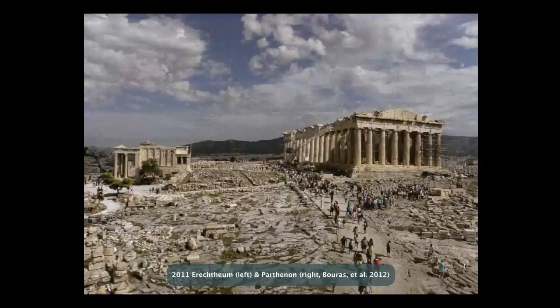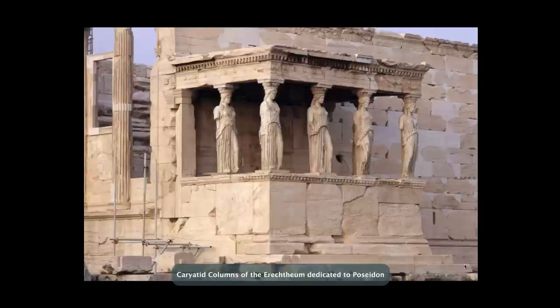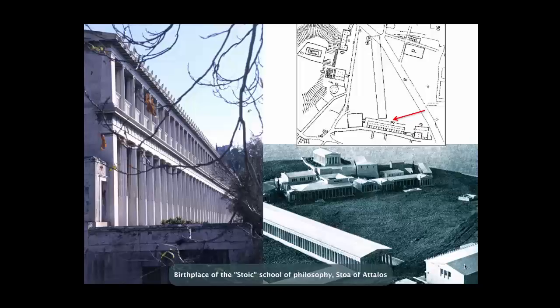We also see the Erechtheion, over to the left, which is the location of the famous Caryatid columns — still various interpretations which we don't have time to go into. This is the birthplace of Stoicism.